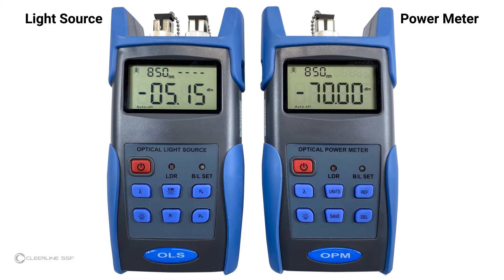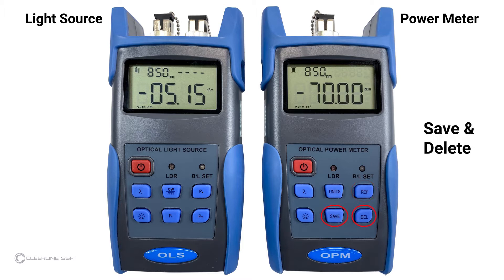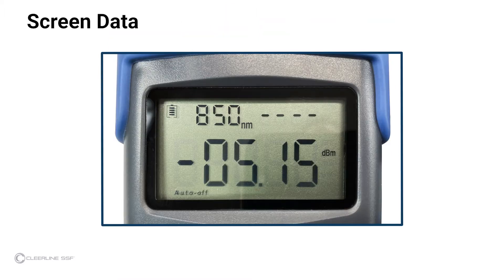Keys specific to the power meter are: units; reference, which sets the current power value in decibel milliwatts (dBm) as the reference value; and save and delete, which allow you to save or delete records.